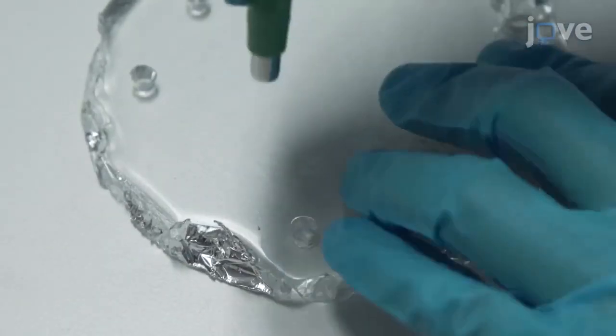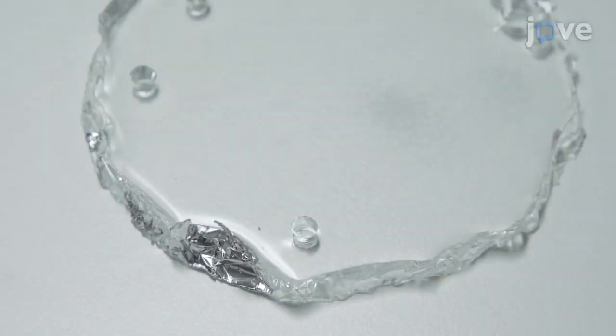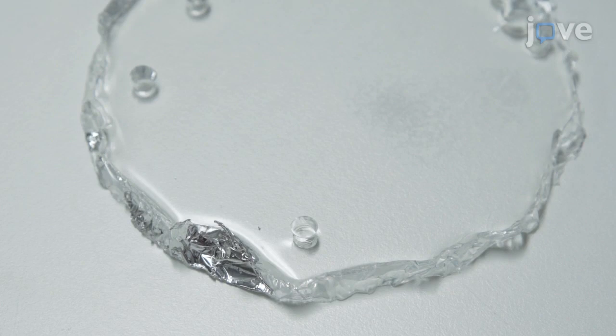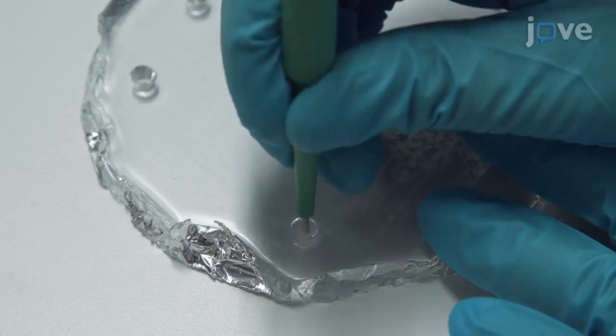Next, punch a 5 mm diameter polydimethylsiloxane or PDMS plug from a cured PDMS slab and punch a 1 mm hole through the center of the plug.